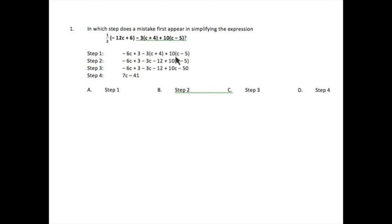Now here, we have a 10 that is going to get distributed with the C and the 5. So we have still negative 6C plus 3, negative 3C, negative 12. 10 times C, positive 10C. 10 times negative 5, negative 50.